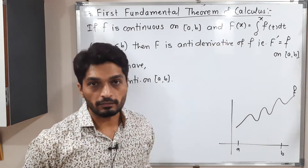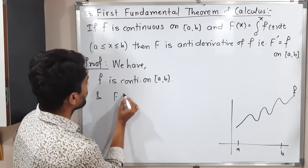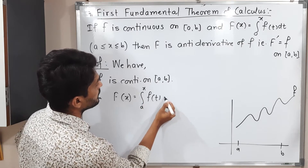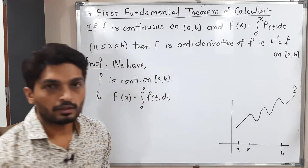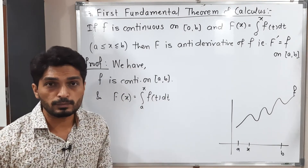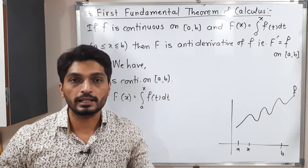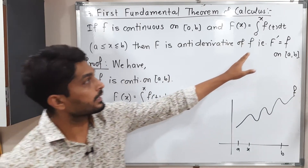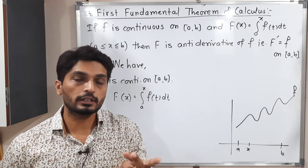We define capital F(x) as the integration from a to x of f(t) dt, where x is any point lying between a and b. We have to prove that if small f is continuous and capital F is the integration of small f, then capital F is the anti-derivative of small f — meaning small f is the derivative of capital F, since derivative and integration are exactly opposite to each other.